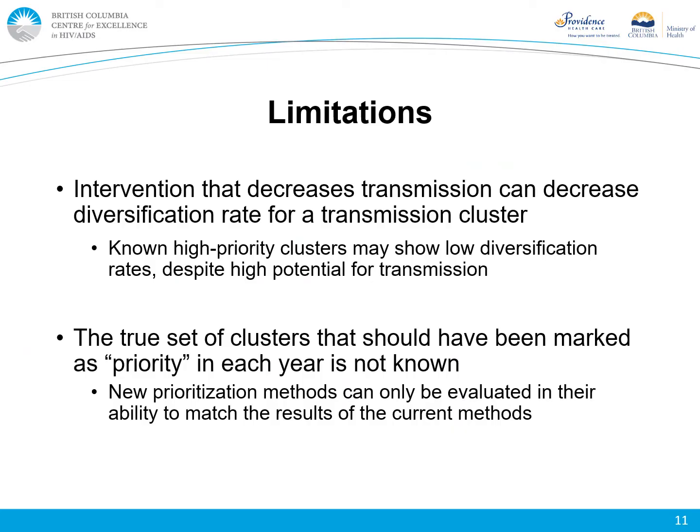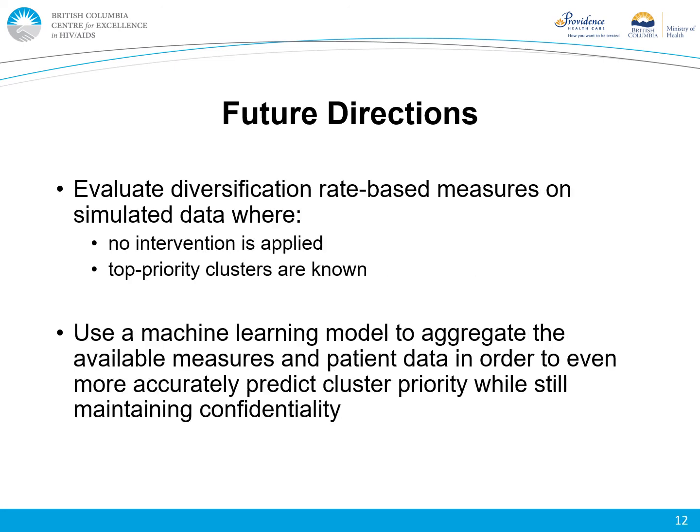There are two main limitations that may affect the results shown in this presentation. The first is that intervention that decreases transmission can decrease the diversification rates of a transmission cluster. This means that known high priority clusters may show low diversification rates despite high potential for transmission, because we already intervene heavily with these clusters. This plays a part in the second limitation, which is that the true set of clusters that should have been marked as priority in each year is not known. This means that new prioritization methods can only be evaluated in their ability to match the results of the current methods, not the true circumstances. Fortunately, both of these issues can be addressed by using simulated data. We are currently working on simulating data that will allow us to evaluate new methods in conditions where no intervention is applied and the true top priority clusters are known.